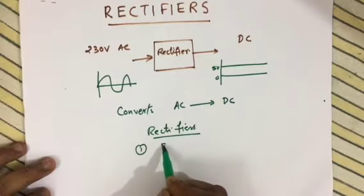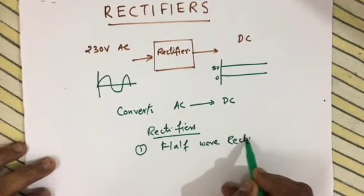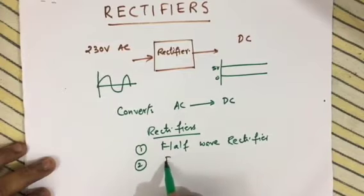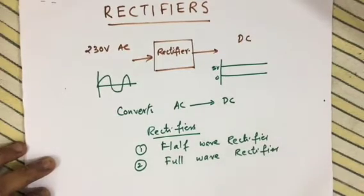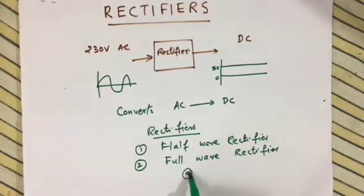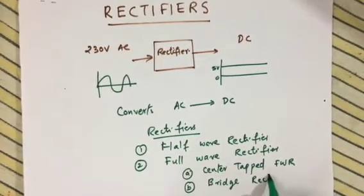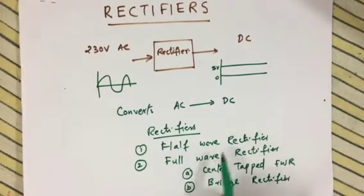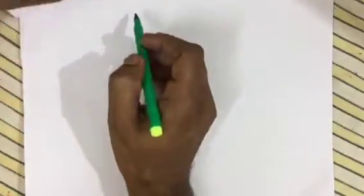The first type is the half wave rectifier, and the second is the full wave rectifier. The full wave rectifier is again classified into two types: the centre tap full wave rectifier and the bridge rectifier. Now we are going to learn about the half wave rectifier first.